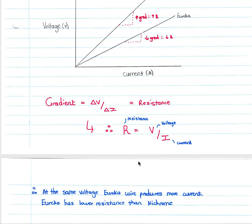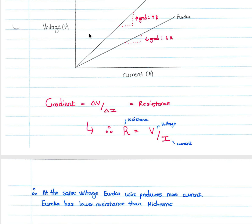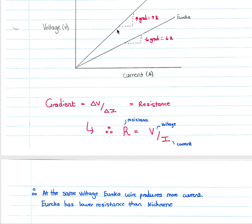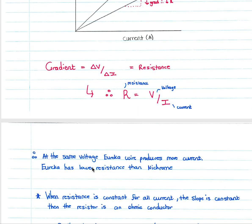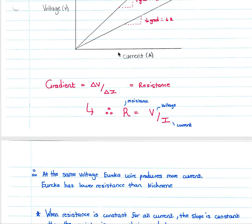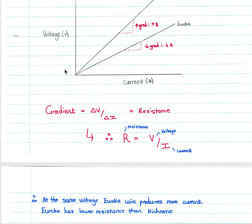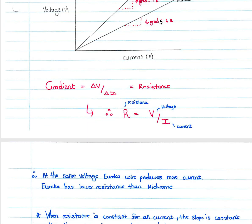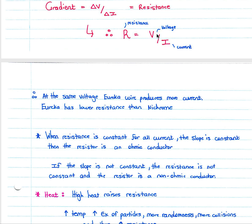At the same voltage, Eureka wire produces more current than nichrome, confirming that Eureka has a lower resistance. When resistance is constant for all current values, the slope is constant, and the resistor is an ohmic conductor. If the slope is not constant, the resistance is not constant, and the resistor is a non-ohmic conductor.